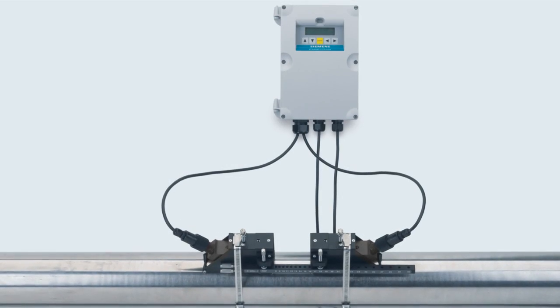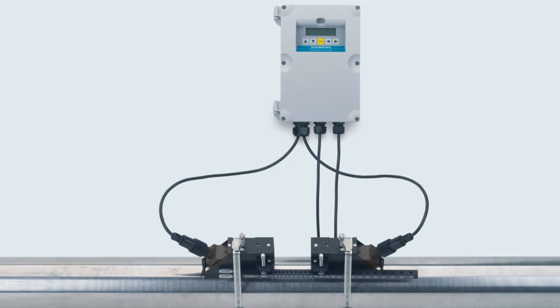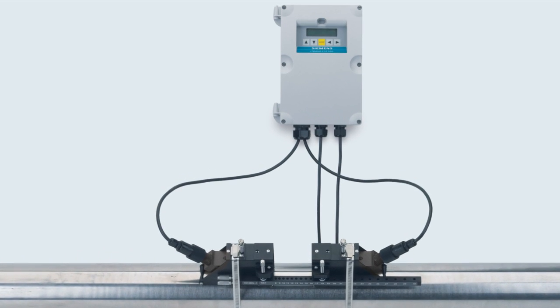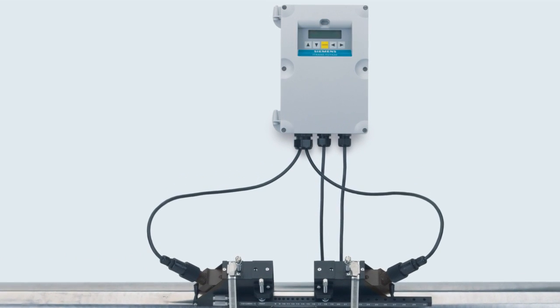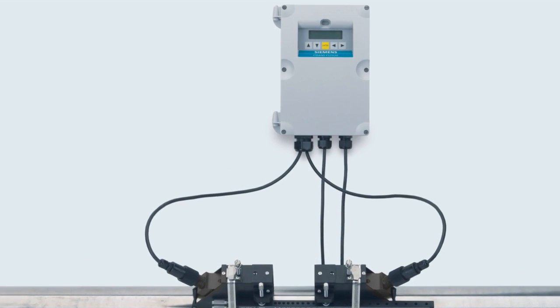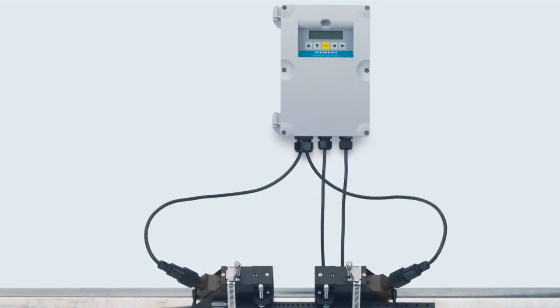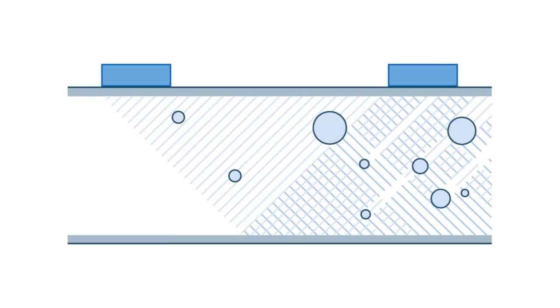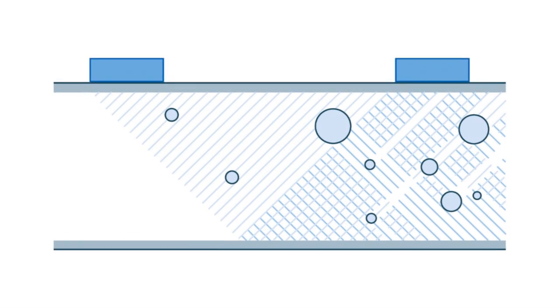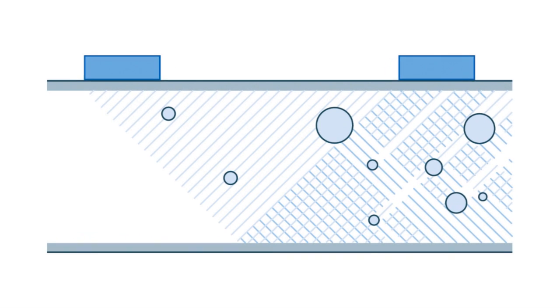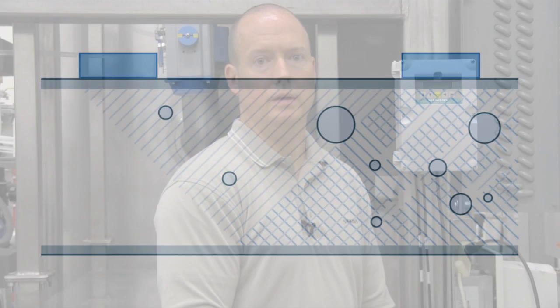The FST020 transmitter, combined with high-precision sensors, utilizes the same wide beam technology used in other Siemens clamp-on flow meters, which makes it possible to measure the flow of many different liquids, including those with moderate aeration or suspended solids. Today, we will review how easy it is to configure the FST020.